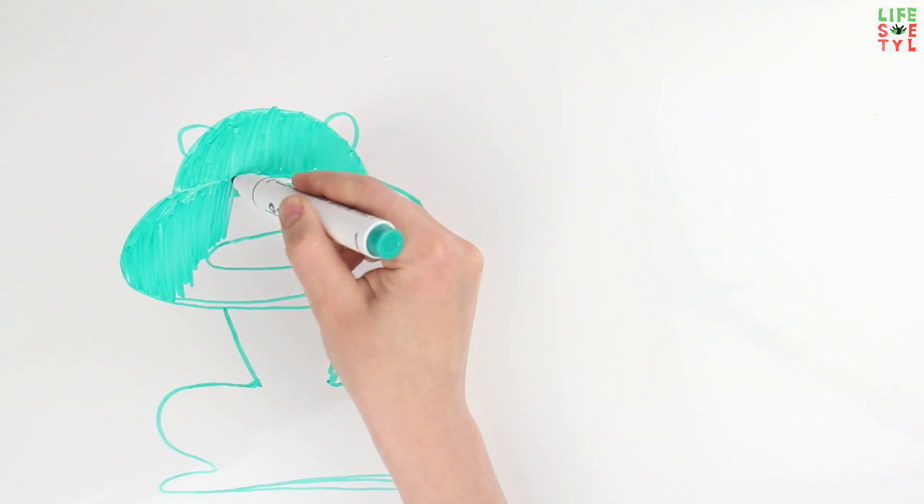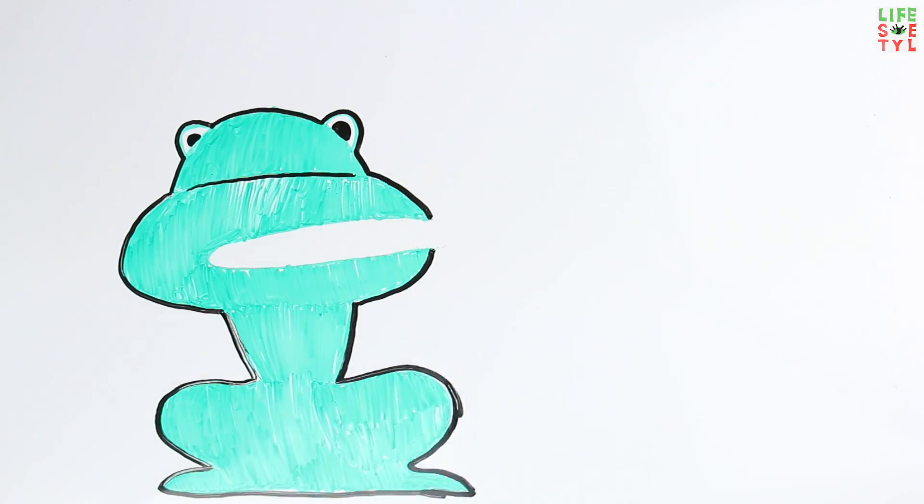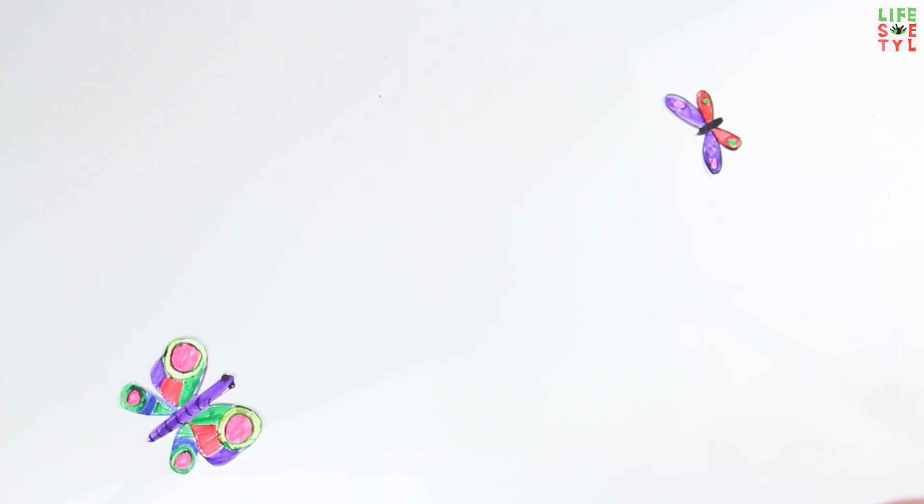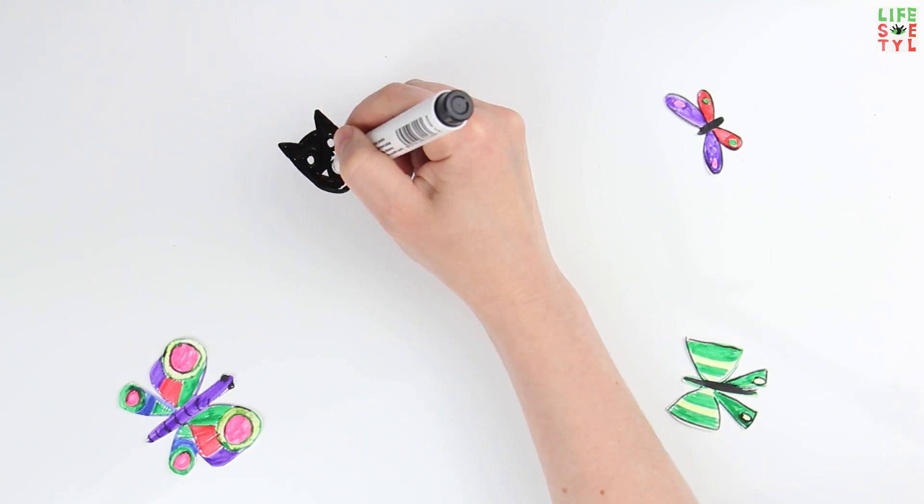The same applies to frogs. To survive without mosquitoes, they will have to begin eating more moths than flies. Bats will also have to survive on a diet devoid of mosquitoes.